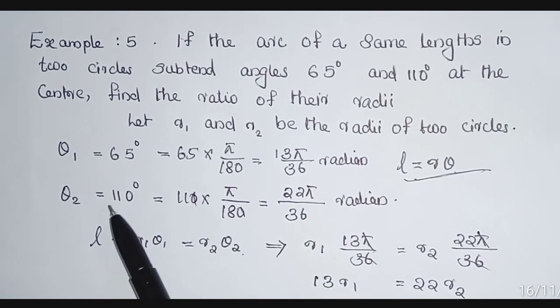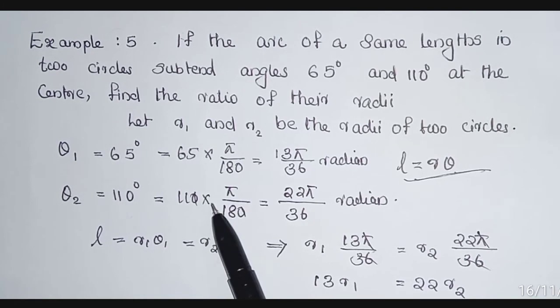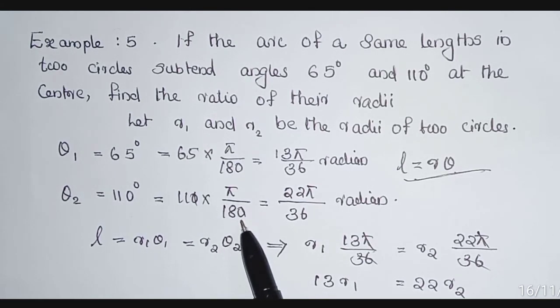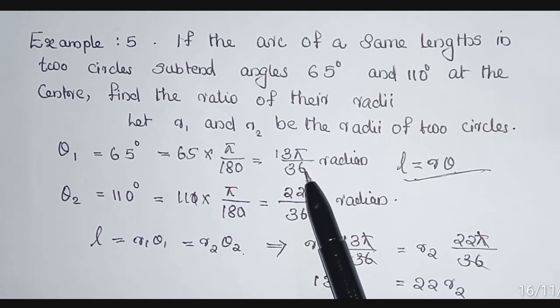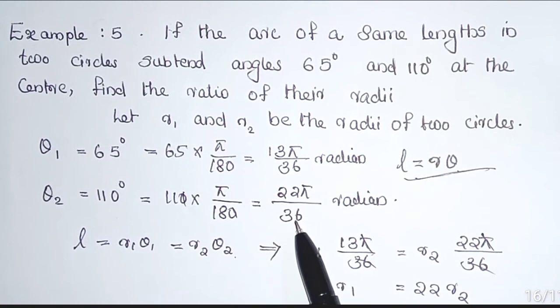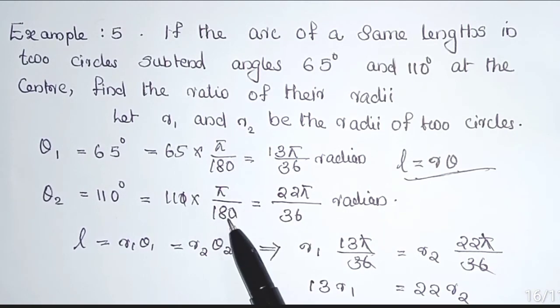Similarly, 110° = 110 × π/180. Cancelling, we get 11π/18. But we multiply numerator and denominator by 2 for equalizing the denominator 36 and 36.